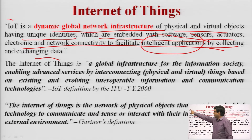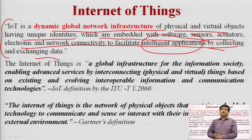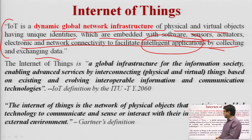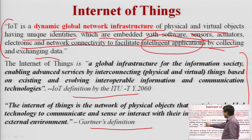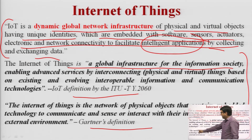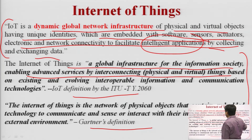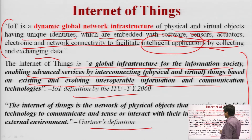IoT devices are embedded with software, sensors, actuators, electronics, and network connectivity to facilitate intelligent applications. These devices are capable of taking self-decisions by collecting and exchanging data. Sensors, connectivity, people, and processes are the key elements of any IoT system. By the ITU definition, IoT is a global infrastructure for the information society enabling advanced services by interconnecting physical and virtual things based on existing and evolving interoperable information and communication technology.